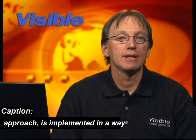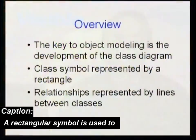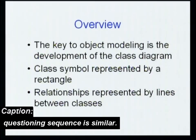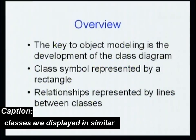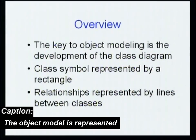Visible Analyst's object modeling approach is implemented in a way that is very similar to the entity relationship model that is covered in a separate tutorial. A rectangular symbol is used to represent both a data entity and a class object. The relationship and cardinality questioning sequence is similar. Attributes of both entities and classes are displayed in similar formats.